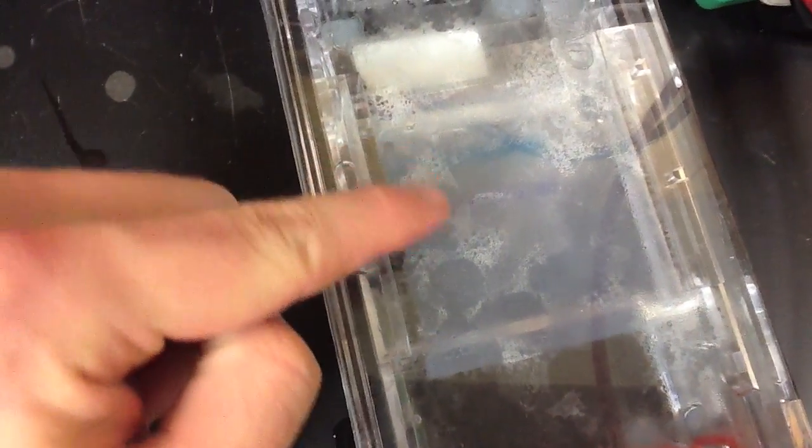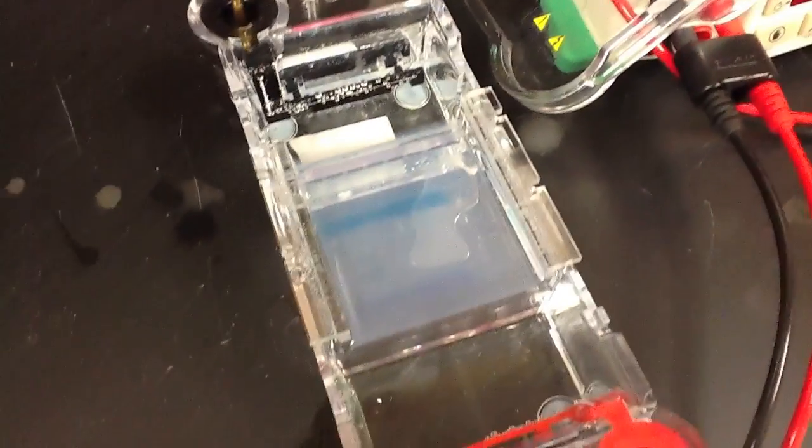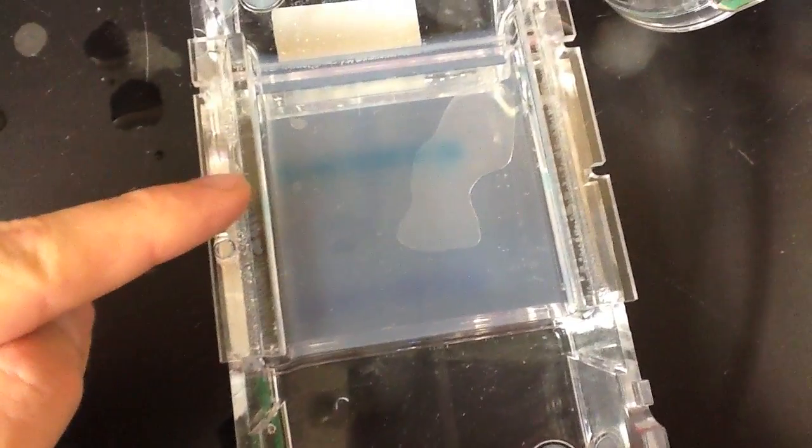As time proceeds, we'll notice that the dye actually moves through the gel, giving us a very distinct front that we can follow. Notice there are two fronts here, an aqua-colored one and a blue one.